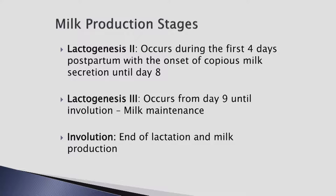Lactogenesis 3 occurs between day 9 until involution. This is the milk production and maintenance phase under autocrine control, which depends upon milk removal and direct nipple stimulation for prolactin release to occur. A feedback inhibitor of lactation — FIL — senses fullness of the breast and adjusts synthesis accordingly. If the breast is full, milk production slows. Empty breasts fill faster. Involution occurs when the milk-producing system is no longer being used. Most women will experience it by about 40 days after the last feeding.